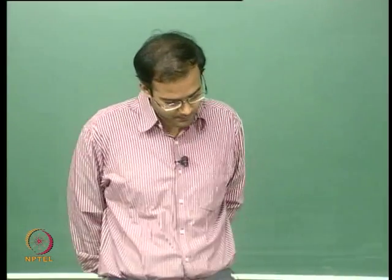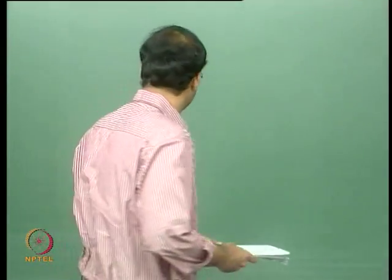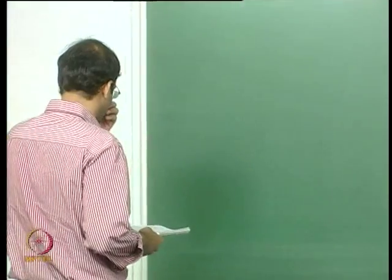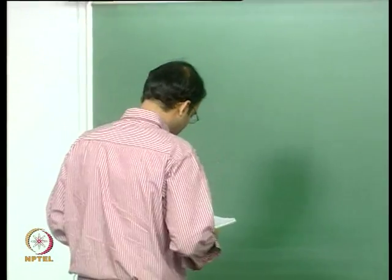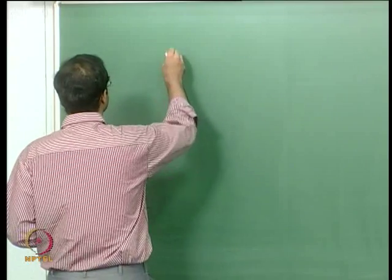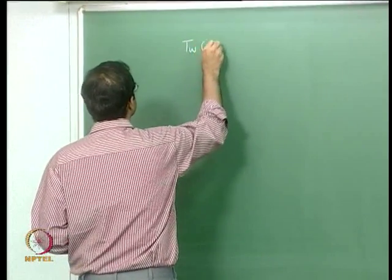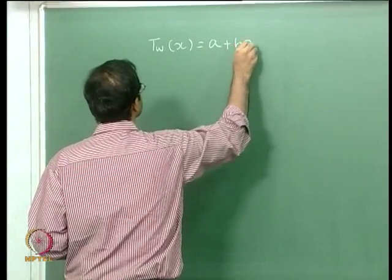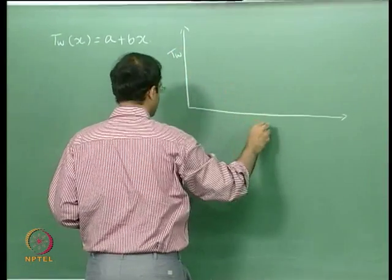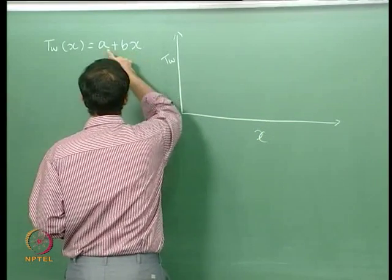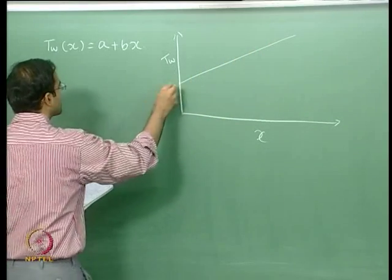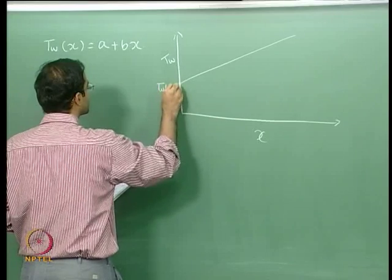Today we will take up a problem on the variable wall temperature case and look at how to get the expression for the wall heat flux variation as well as the heat transfer coefficient. We take the example of a linear surface temperature variation of the form T_wall(x) = a + bx. If you plot the surface temperature as a function of x, at x=0 it equals constant a and varies linearly from there.